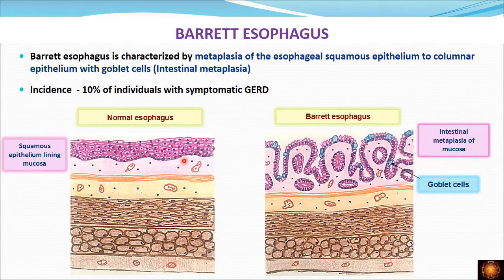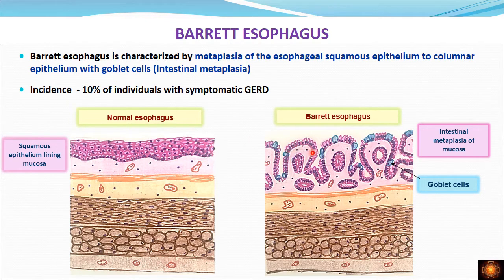This is a normal esophagus where the mucosa is lined by the squamous epithelium, then we have submucosa, a circular layer of muscle, then longitudinal muscle and adventitia. This squamous epithelium present in the normal esophagus is replaced by columnar epithelium, and this columnar epithelium has goblet cells also. This columnar epithelium with goblet cells we call intestinal metaplasia.